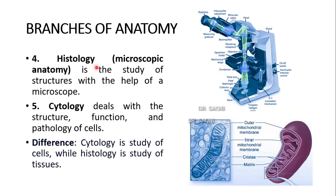Continuing the branches' definitions: histology or microscopic anatomy is the study of structures with the help of a microscope. You can see this is a simple microscope — we put the slide over here and study with this lens. Number five is cytology, which deals with the structure, function and pathology of cells. This is a part of the cell — this is mitochondria — and such structures are seen in cytology. The difference: cytology is the study of cells while histology is the study of tissues.